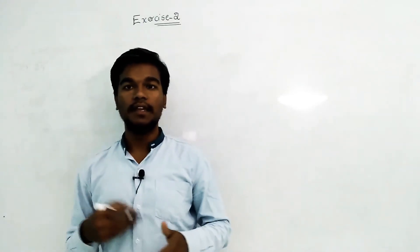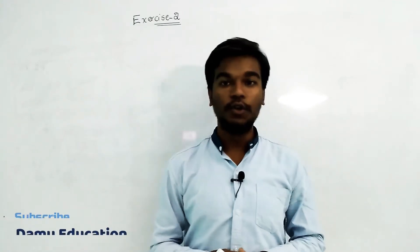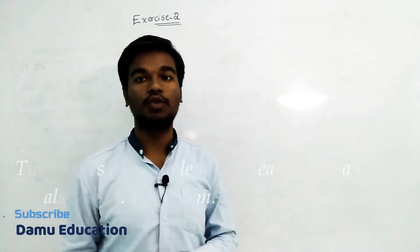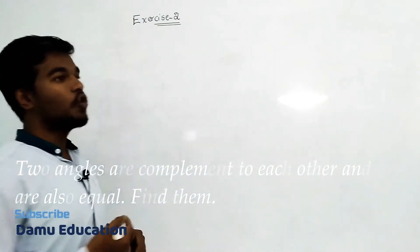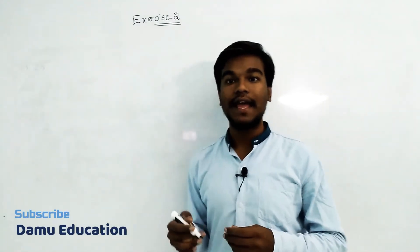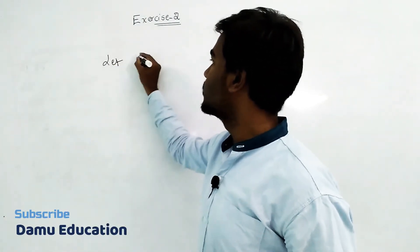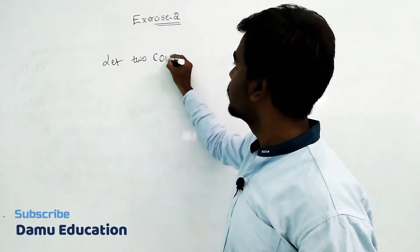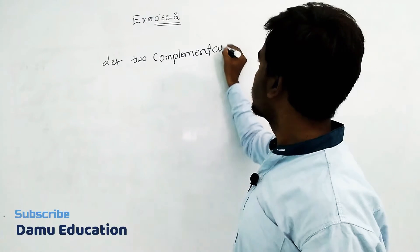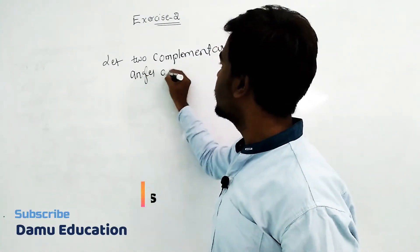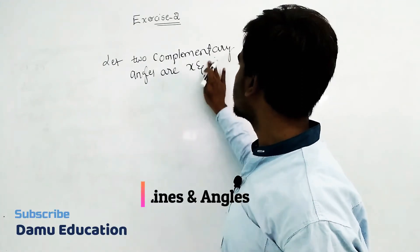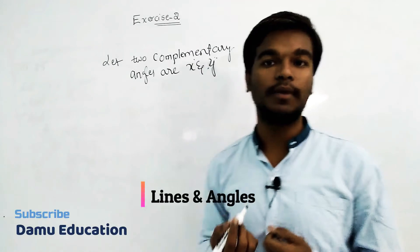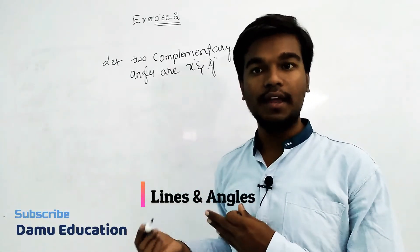In this module we will discuss the solution for the third question. The question is: two complementary angles are equal to each other — what are the two angles? Let two complementary angles be x and y degrees. The given condition is that the two complementary angles are equal to each other, meaning x equals y.